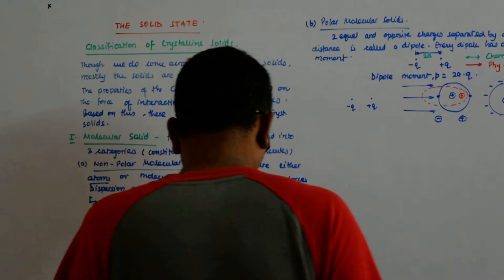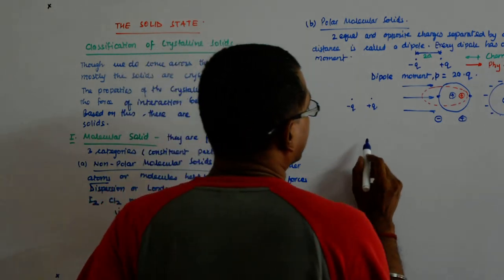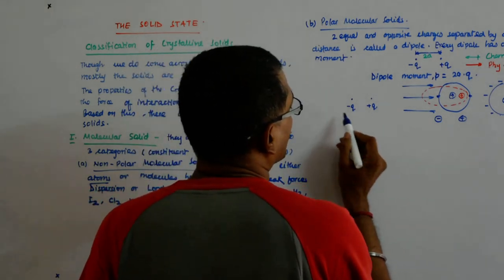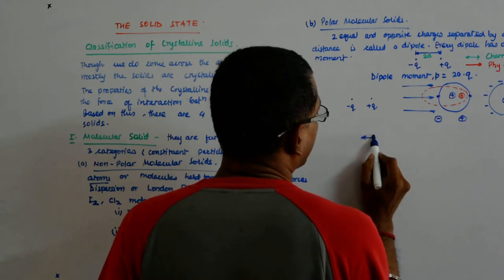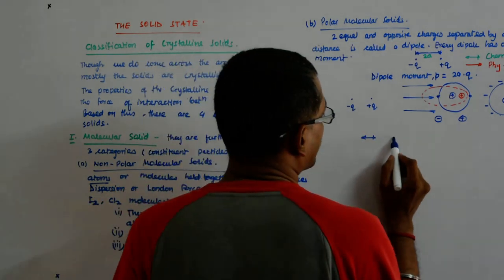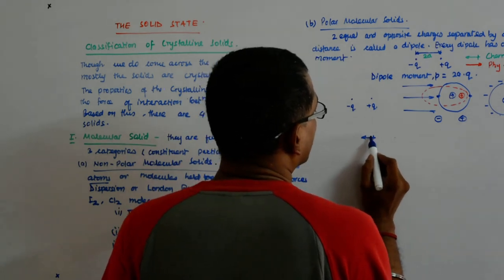Now what happens if there is a dipole like this? We show it like that in chemistry. We do not show it like this, we show it like that. There is a dipole like this.